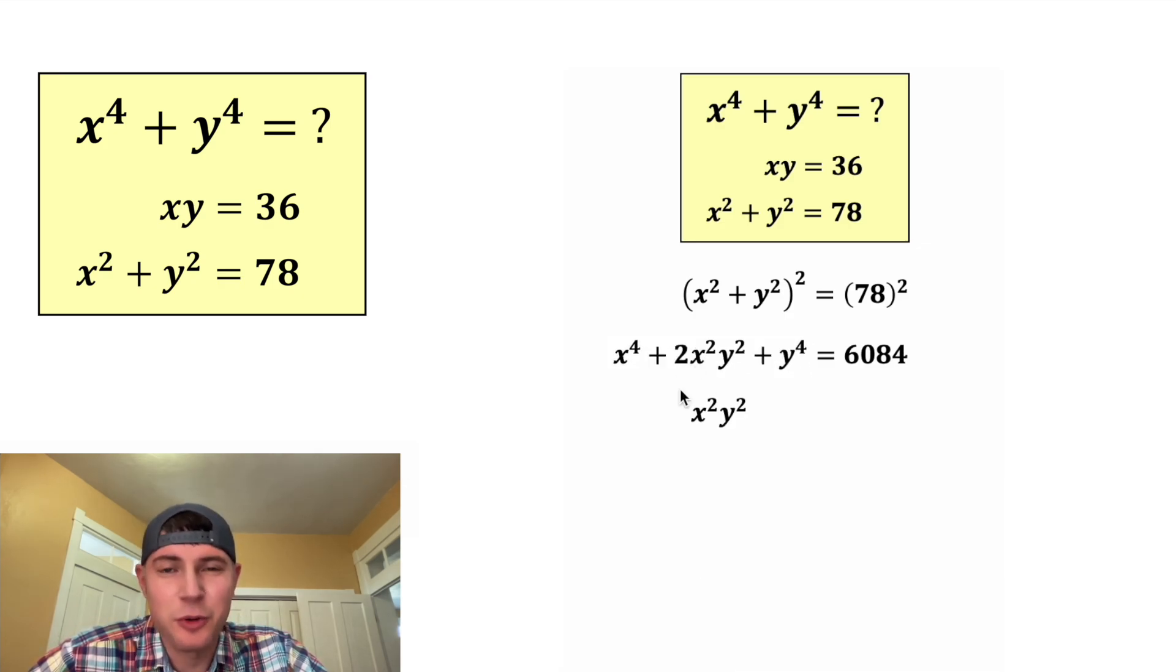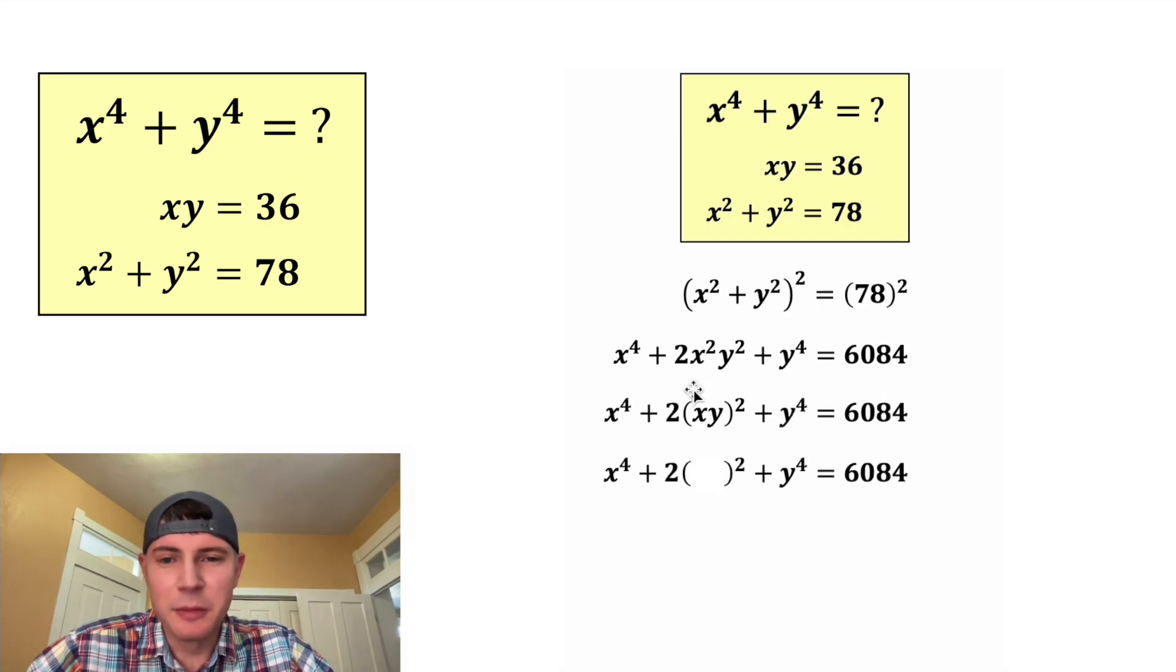Next, let's focus on this x squared y squared. x squared y squared is the same thing as xy squared. And then we can copy down everything else. In the place of the xy, we're going to plug in 36. And then 2 times 36 times 36 is equal to 2,592.